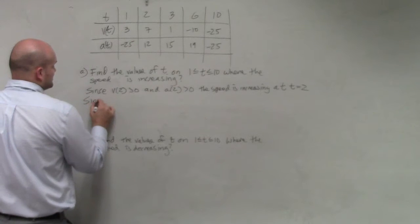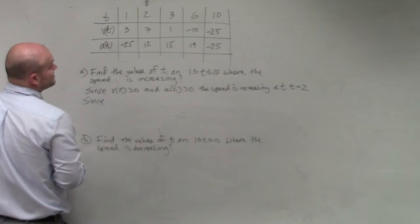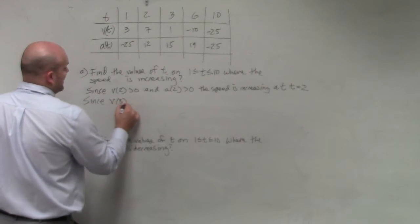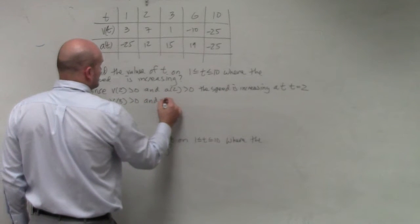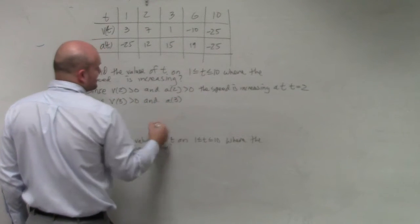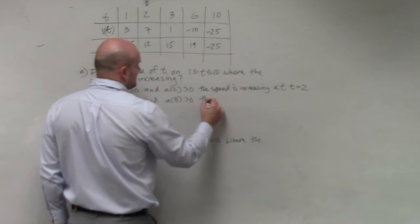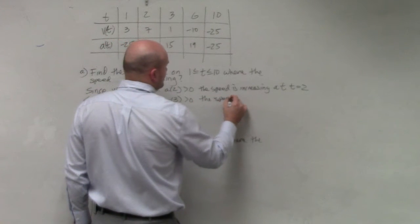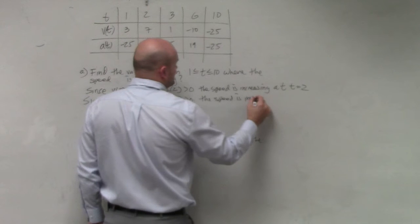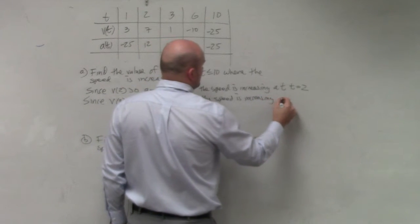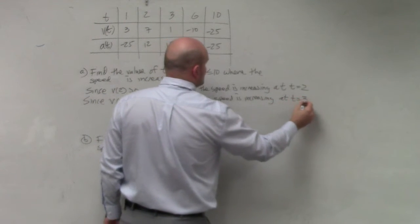And then I can just continue on with the rest of the values. Since the velocity at time 3 is greater than 0, and the acceleration at time 3 is greater than 0, the speed is increasing at t equals 3.